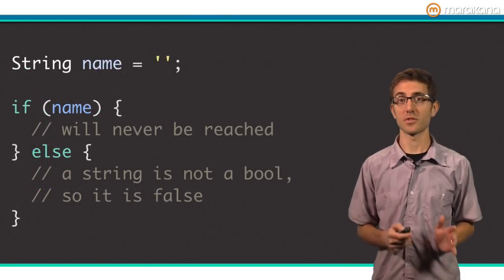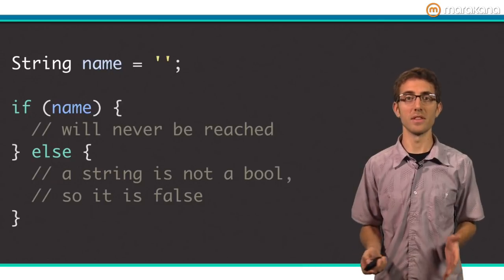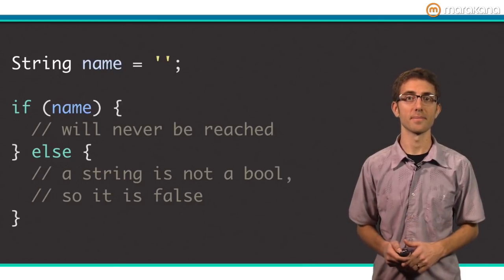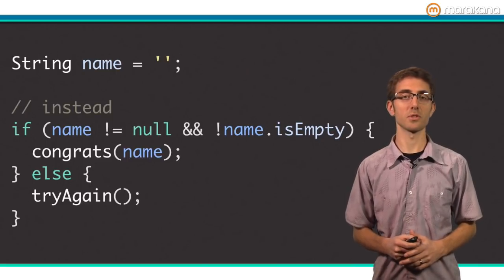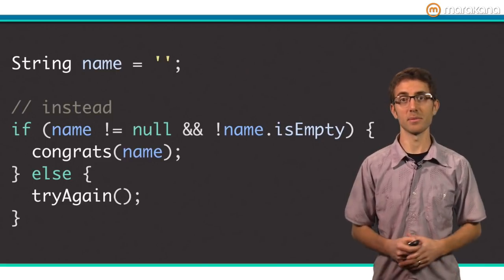Here the variable name is a string. Of course a string is not a bool, and therefore the else block is run. Here's the correct way to write this code. You must be more explicit, but the advantage is that the rules for truthy and faulty values are very simple to remember.